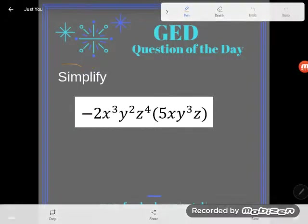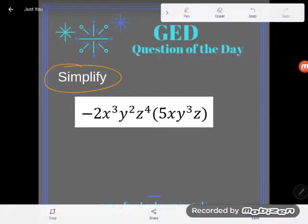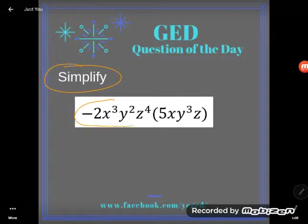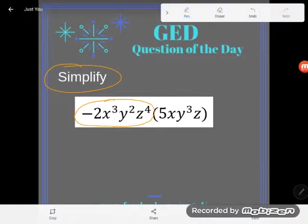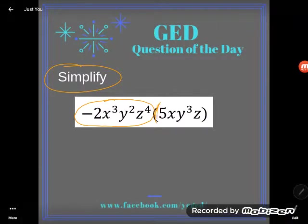So first of all, this problem just says simplify. What is it asking me to do? Well, this is what I want you to notice. I see this big, long, ugly number. I know it has letters in it, I know it looks gross, but can you see it as one big, long, ugly number? Negative 2x cubed, y squared, z to the fourth power. And it's multiplying.